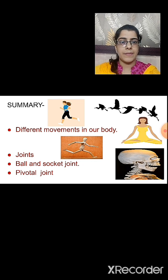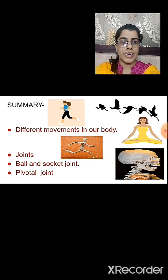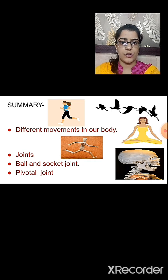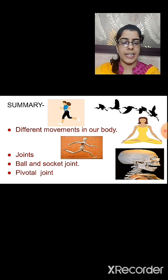Then we studied about joints. We saw that different parts of our body show different movements — this is possible because of joints. What are joints? The part of the body where two bones meet. Because of joints, we are able to rotate or bend our body. We studied two types of joints: the ball and socket joint and the pivotal joint. The ball and socket joint is located in the shoulder and hip region, which allows complete movement of our body.